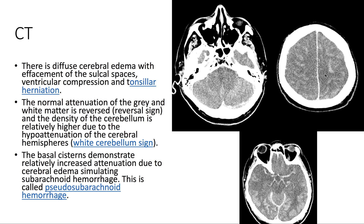Additionally, we see that the cerebellum has higher attenuation in comparison to the cerebral hemispheres. This is the white cerebellum sign. The basal cisterns demonstrate relative increased attenuation due to cerebral edema, simulating subarachnoid hemorrhage. This is called pseudo-subarachnoid hemorrhage.